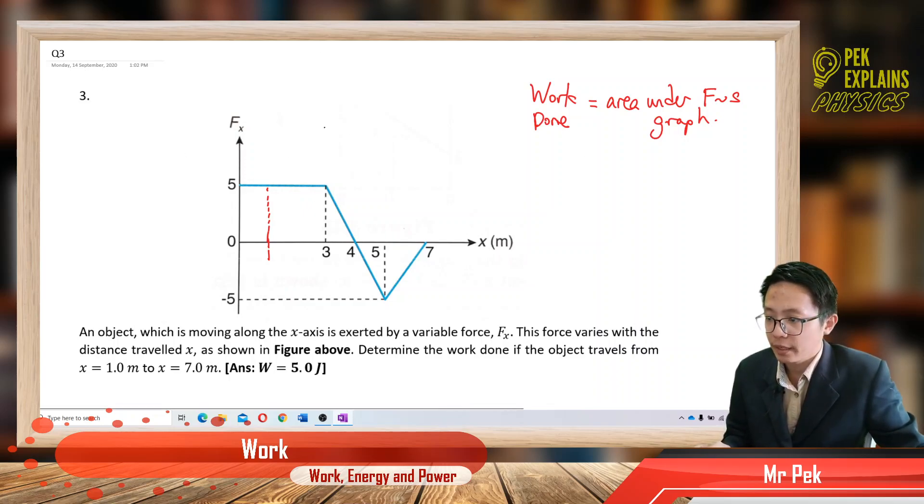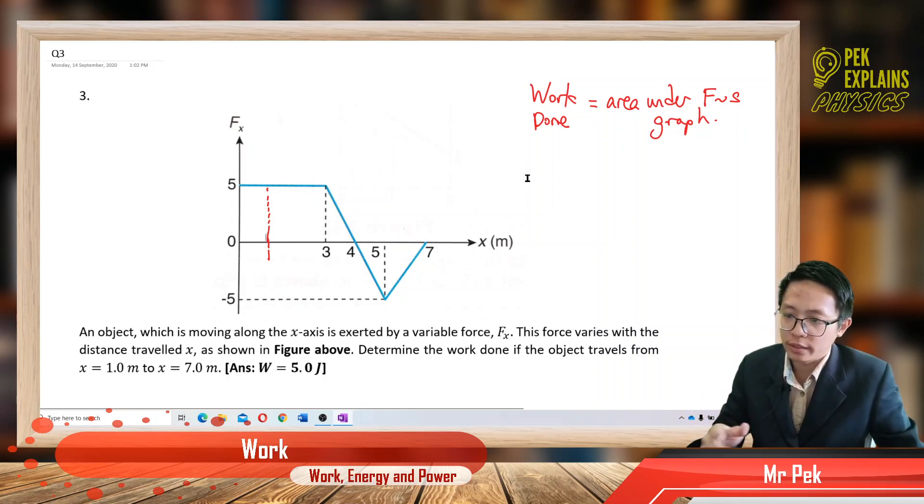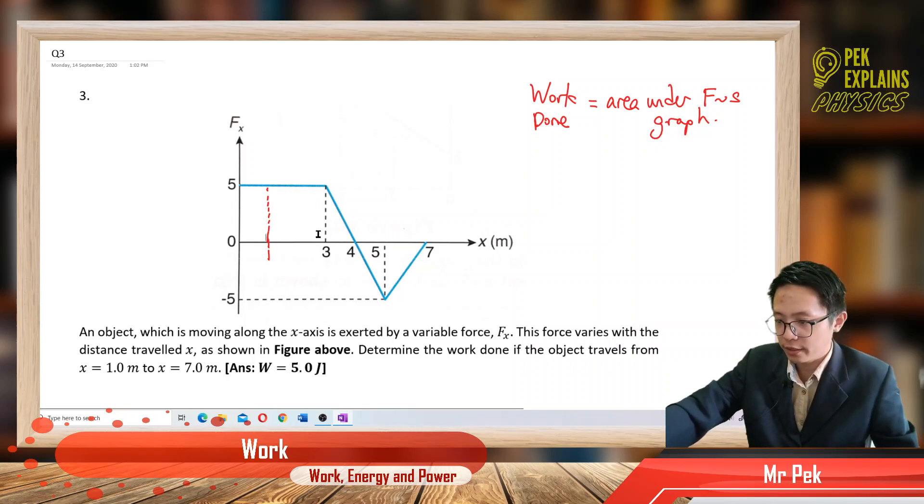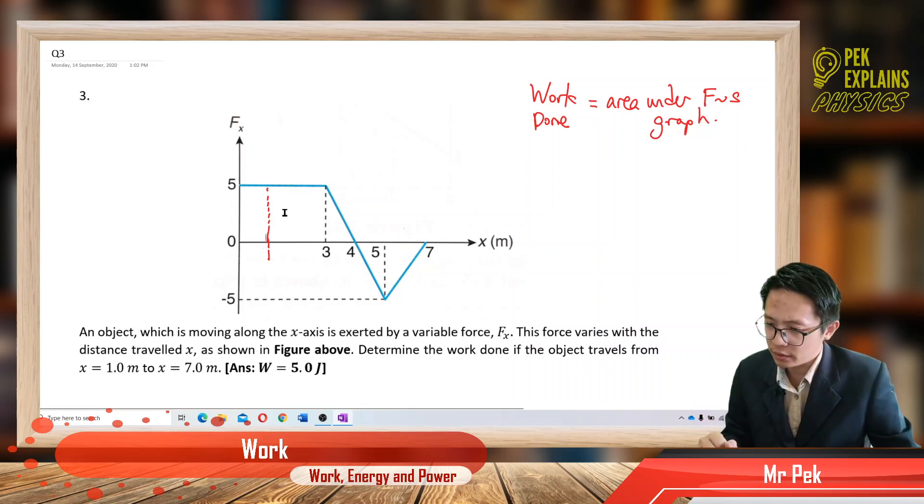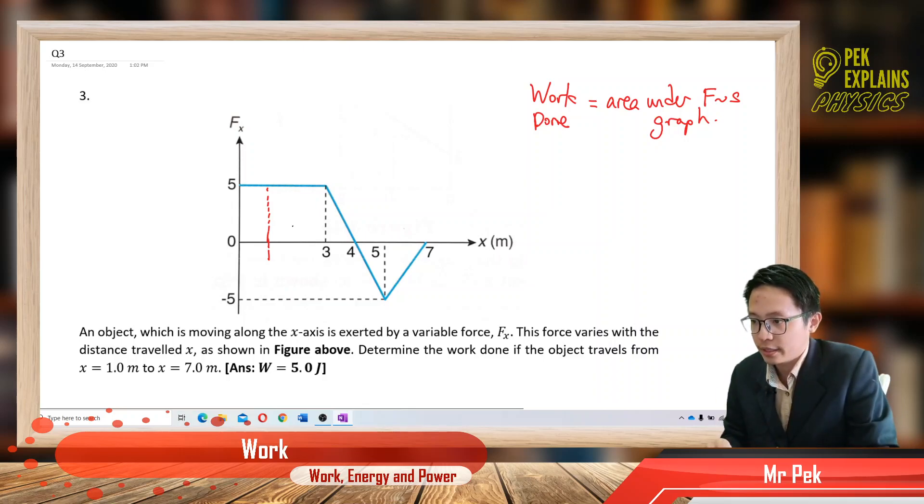Now, how to find the work done provided a force displacement graph? We know that work done is actually the area under the force displacement graph. You just find the area and then you get the work done. So you see there are different shapes here, different shapes of area. Better we break it into parts. Let's find the work done between 1 and 3. It's just a square.